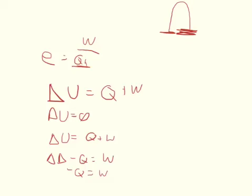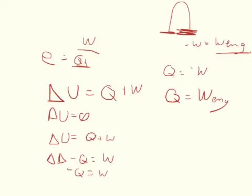This could also be rearranged, so we could say that Q is equal to negative W. Negative W, negative work on the engine, is equal to the work done by the engine on the environment. So we want to find out how much work the engine does on the environment, so we will set up our equation as Q is equal to the work of the engine on the environment.